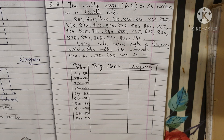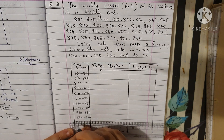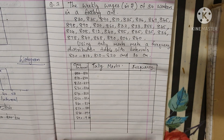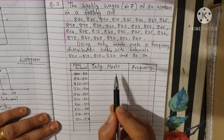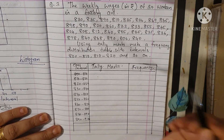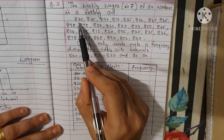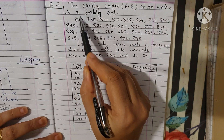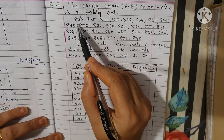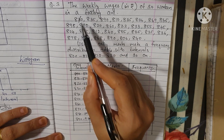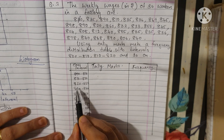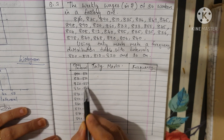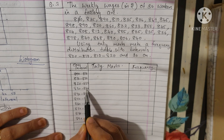This is the class interval. We are going to do the tally marking. We will start with the first data point: 830. 830 is marked. Now, which class does it belong to? We have 820 to 830, and 830 to 840 — there are two possible classes.